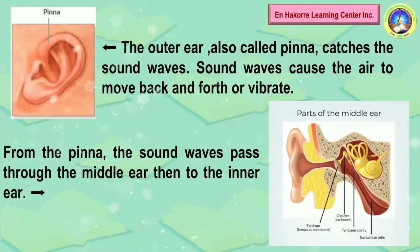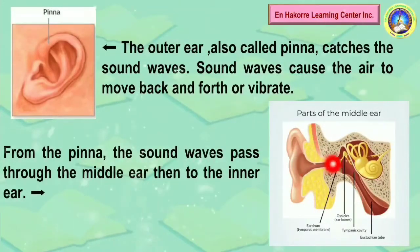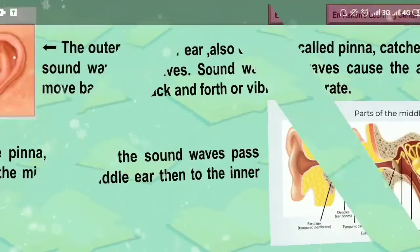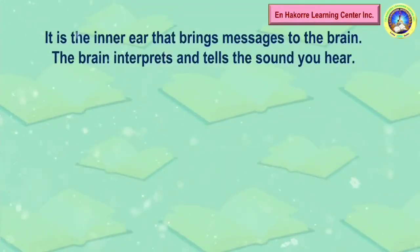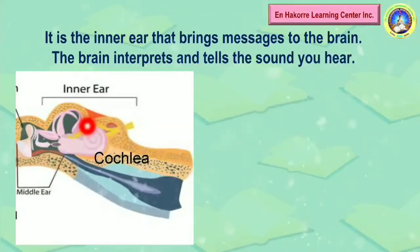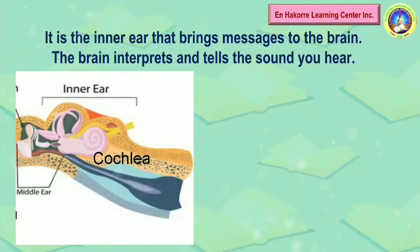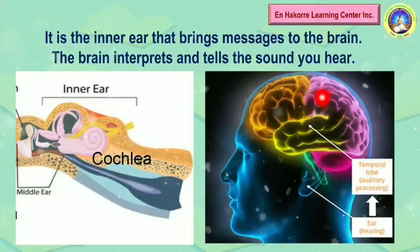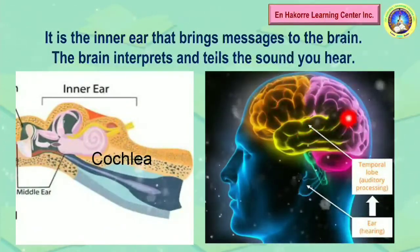From the pinna, the sound waves pass through to the middle ear, going to your eardrum. Then it will go to the inner ear, which has the cochlea. The inner ear brings the message to the brain. So from the middle ear, the sound goes to the inner ear, and the cochlea sends the message through your nerves to your brain, telling you what sounds you hear from outside.